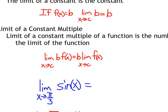Here's an example: we want to find the limit as x approaches π/3 of the sine function. Sine is continuous for all values of x, so we can simply plug in π/3. Sine of π/3 equals √3/2 from the unit circle. So that's the limit.